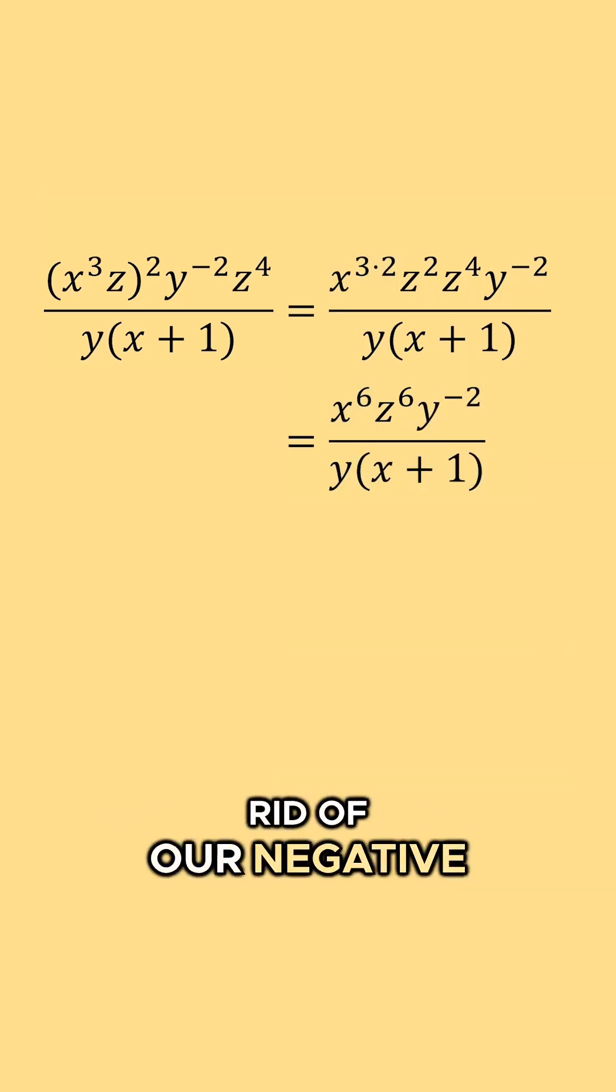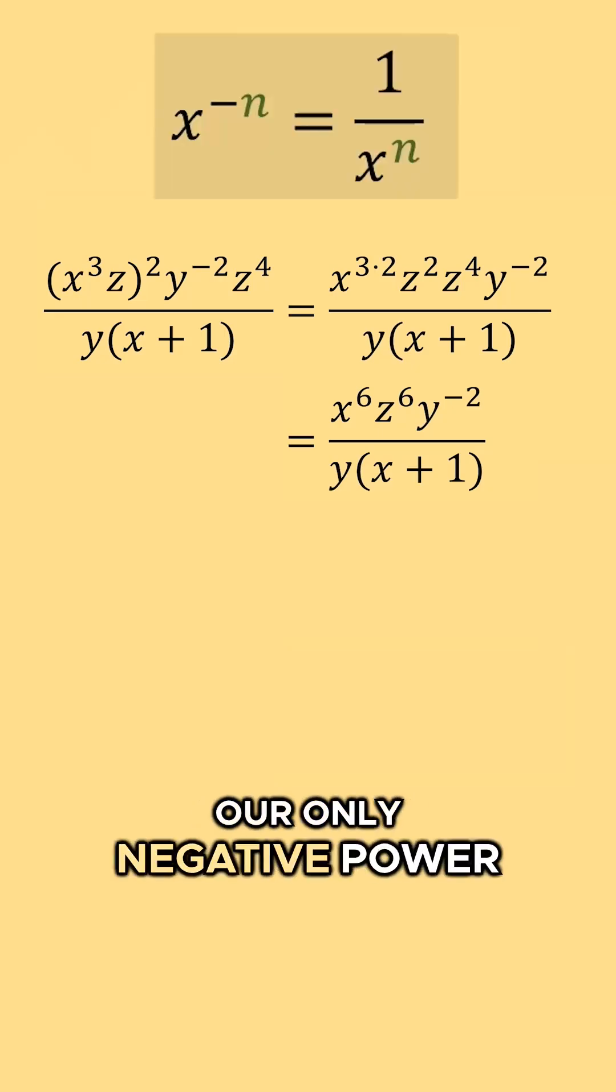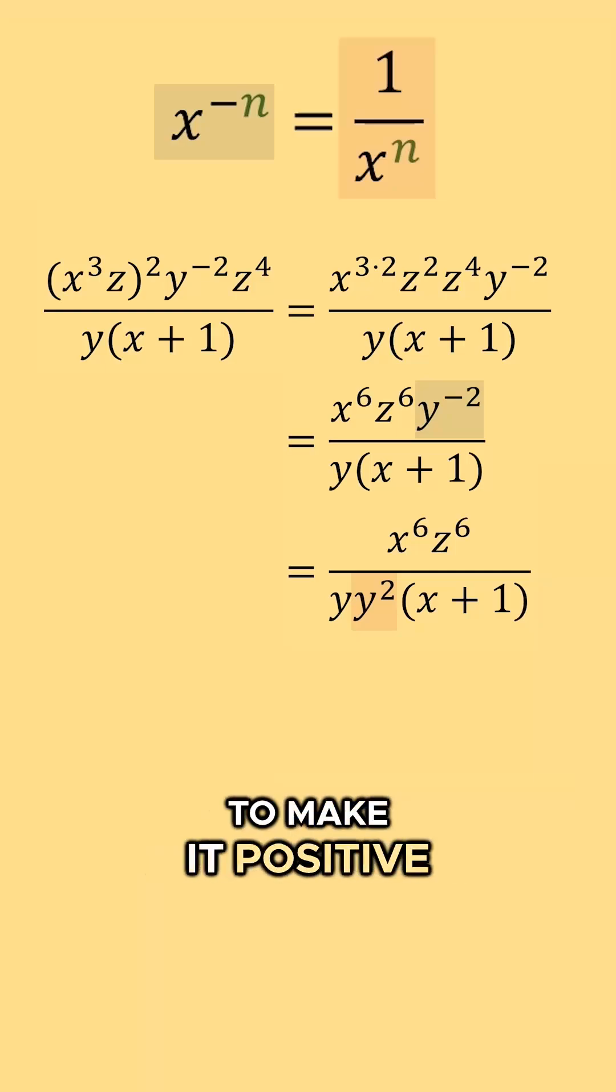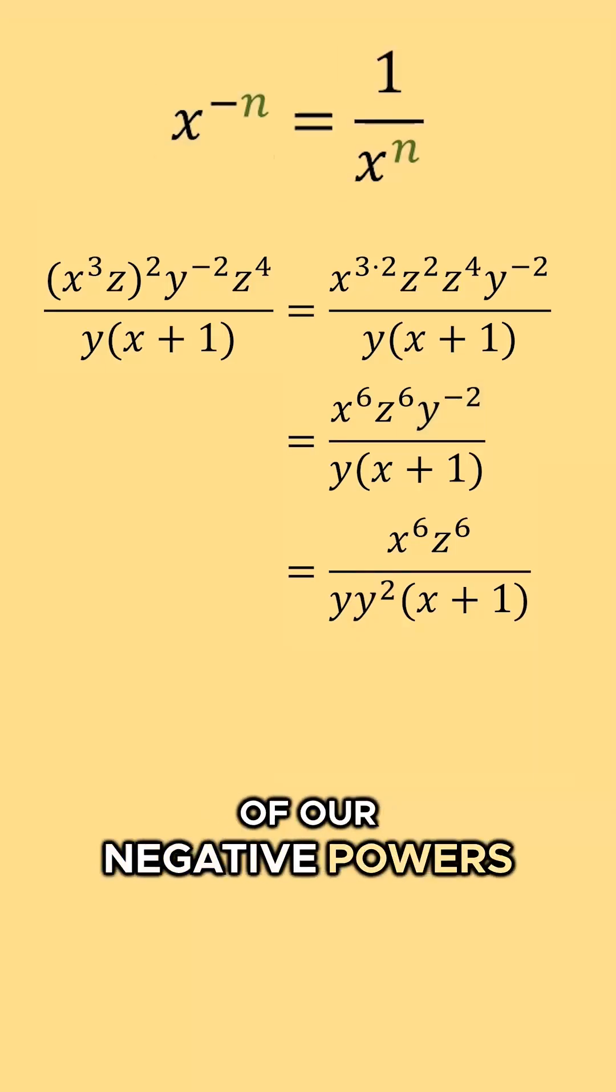Now let's get rid of our negative powers. Our only negative power is y to the negative two, and so we can move that down to the denominator to make it positive. So we took care of our negative powers.